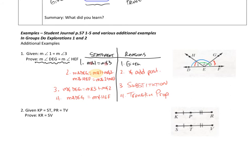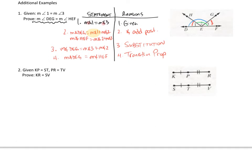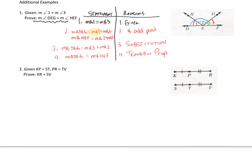Let's move on to the next one. This one is similar, so you may want to pause and see if you can do it on your own. We have our statements and our reasons. Statement one: KP equals ST and PR equals TV — and this was our given.